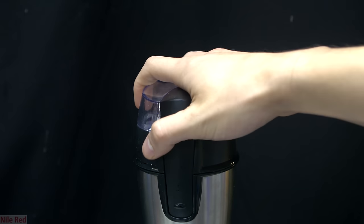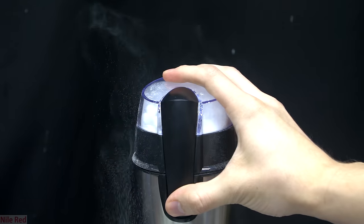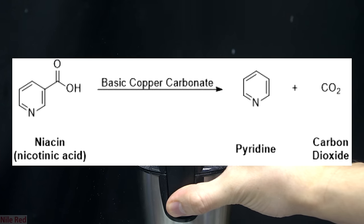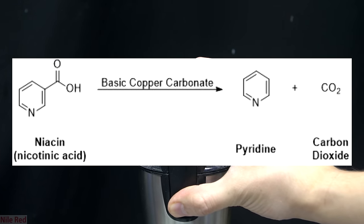Today we're going to be extracting some niacin from niacin pills. Niacin is also known as vitamin B3, and the reason that we want it is because we can carry out a reaction known as a decarboxylation and convert it to something called pyridine.